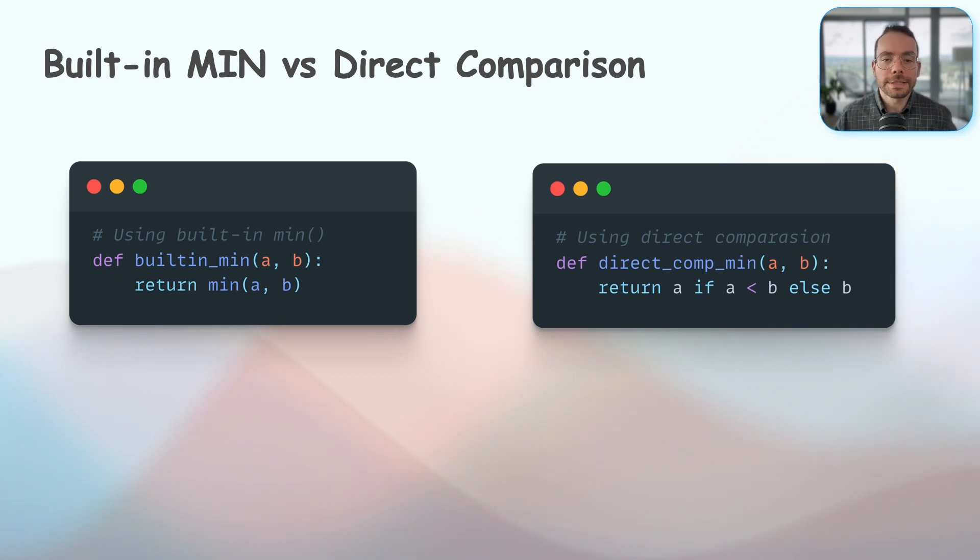We could also find the min or max by a direct comparison approach. And at first glance, you might think the built-in function's got to be faster. But let's not assume, let's benchmark.